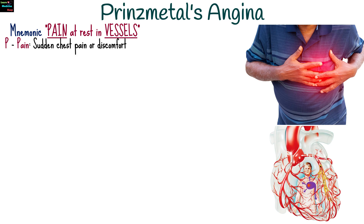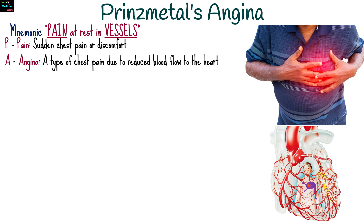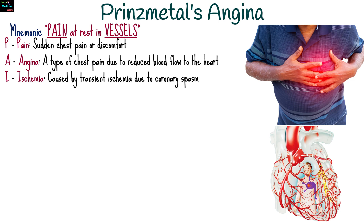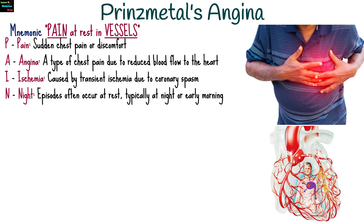P for sudden chest pain or discomfort. A for angina, a type of chest pain due to reduced blood flow to the heart. I for ischemia — it is caused by transient ischemia due to coronary spasm. N for night episodes that often occur at rest, typically at night or early morning.